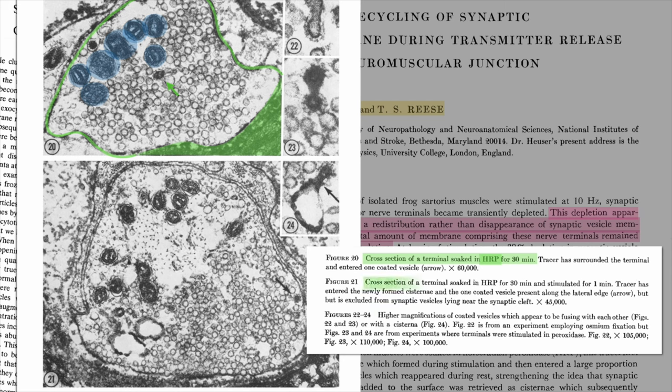In figure 21, the terminal was stimulated for a minute and caused HRP to enter structures now known as endosomes. Here again, the scientists only saw one vesicle filled with HRP.